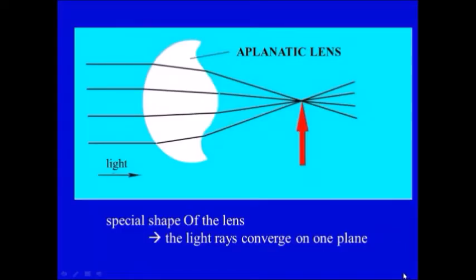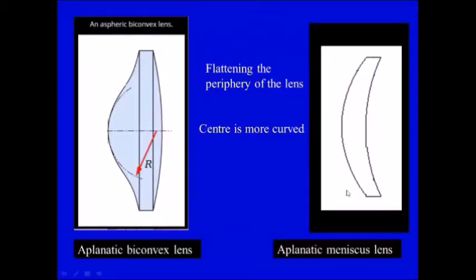The aspheric lens, or called the aplanatic lens, is a special type of lens that will make the focus in one point. The whole lens when it's exposed it will come to one point.